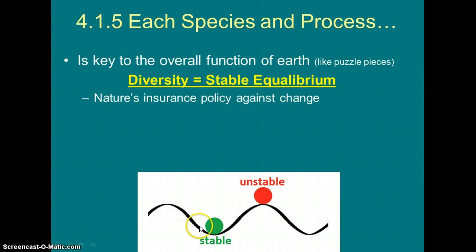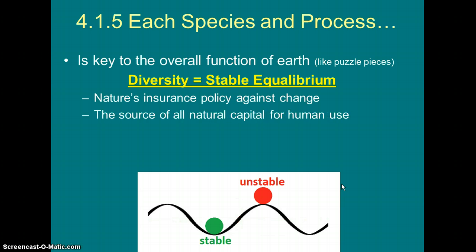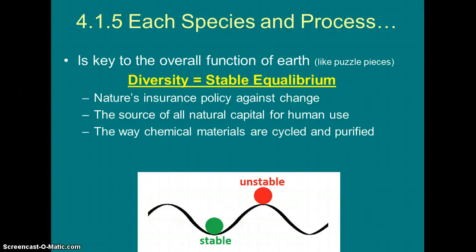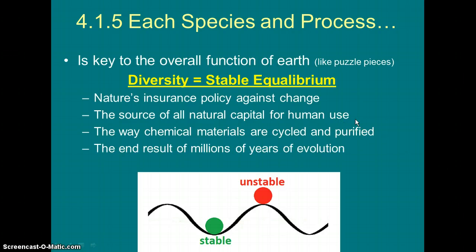But if I push this red ball, it's going to move to a totally new equilibrium position — that's not good for an ecosystem or biome. This diversity is our source of all natural capital, providing many more goods and services. Organisms with that diversity drive nutrient cycles and services like water purification that wetlands provide. And lastly, all this diversity took millions and millions of years to develop, so when it disappears, it's going to take a very long time to come back — if it ever does.